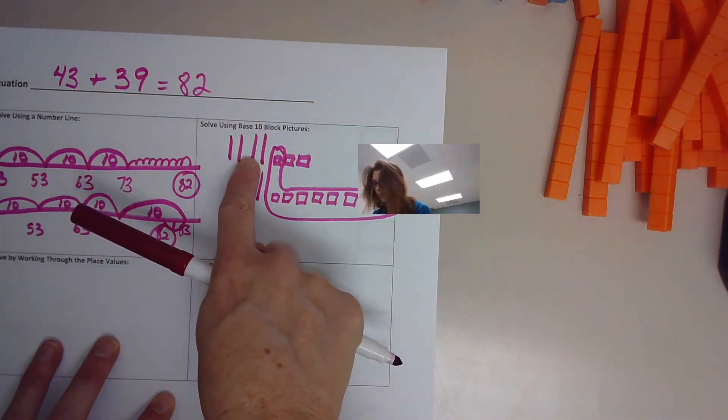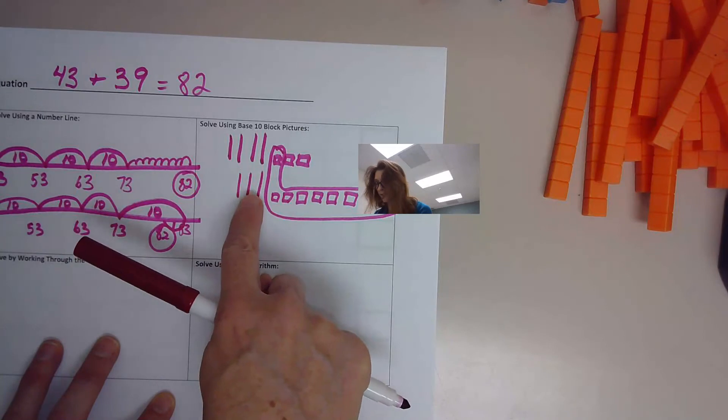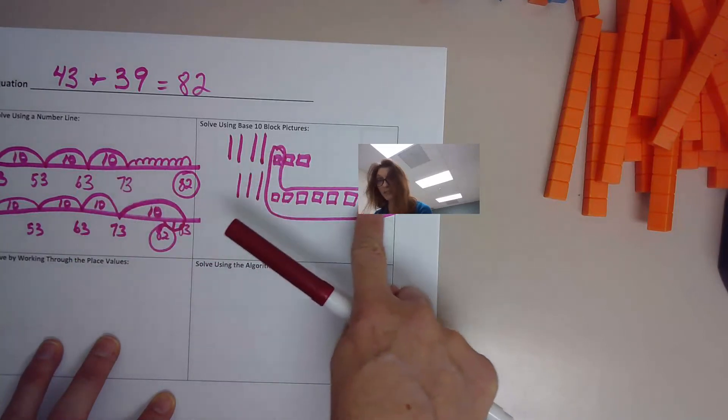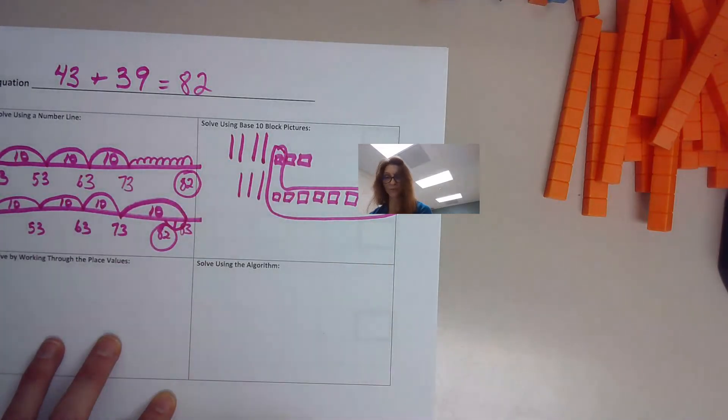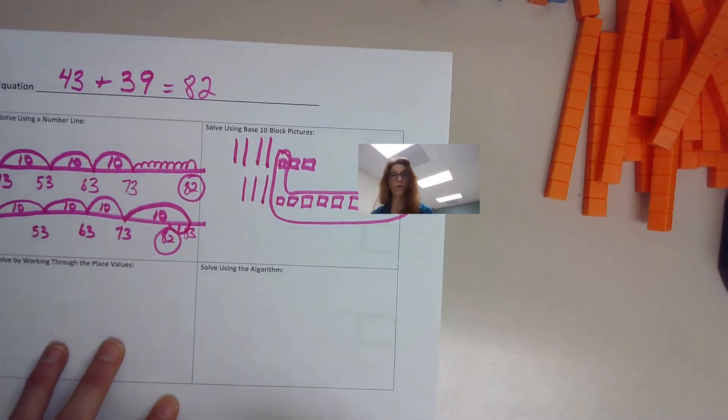So then you can count it. This is 10, 20, 30, 40, 50, 60, 70. And now this one makes a group of 80, 81, 82. Okay. So we're at 82.